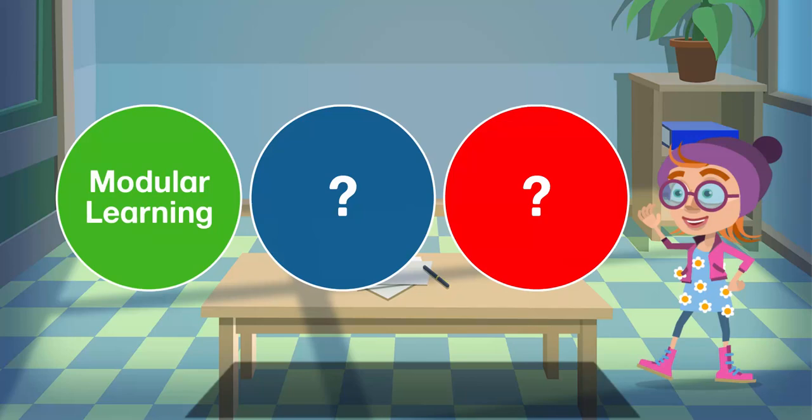Modular learning. Numerical understanding is not a single consolidated process. If a pupil can comprehend addition, that doesn't mean that they are equally capable of long division. Instead of struggling with one element of understanding, with Numeracy by Strand pupils are able to develop across multiple operational skills simultaneously.